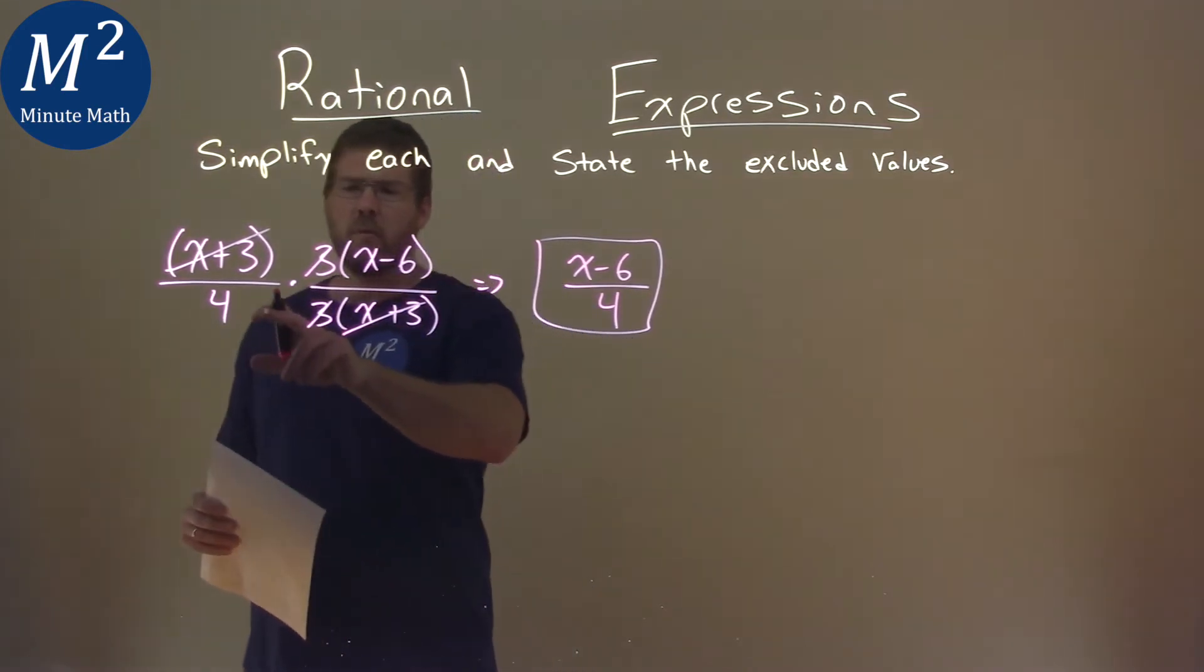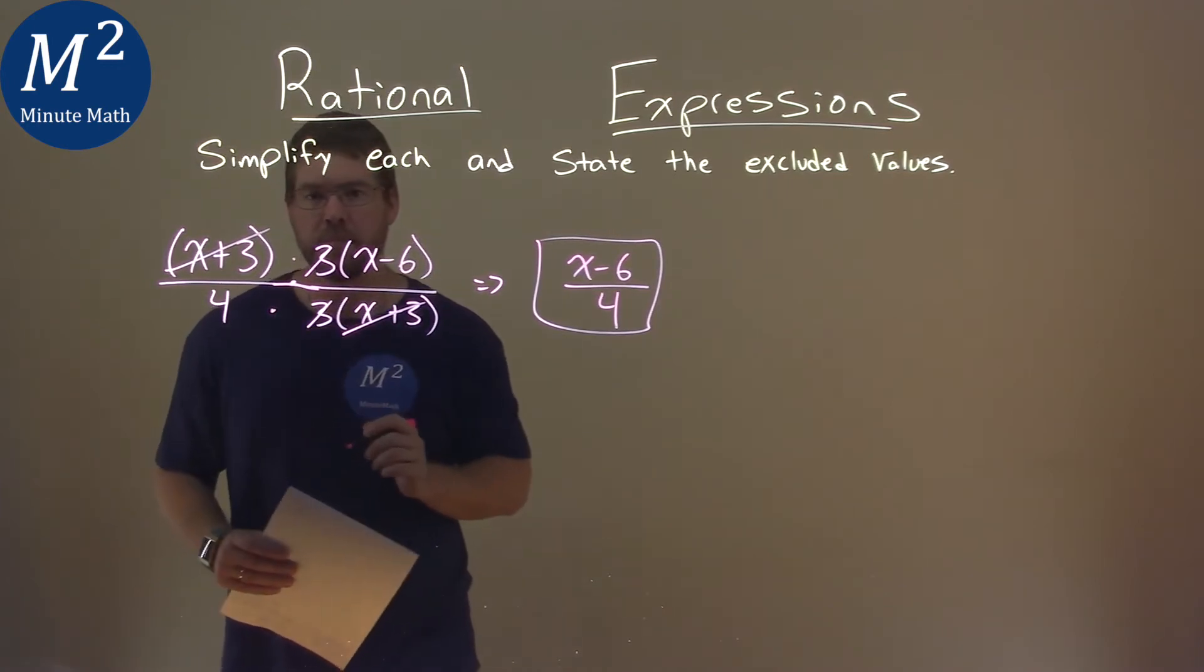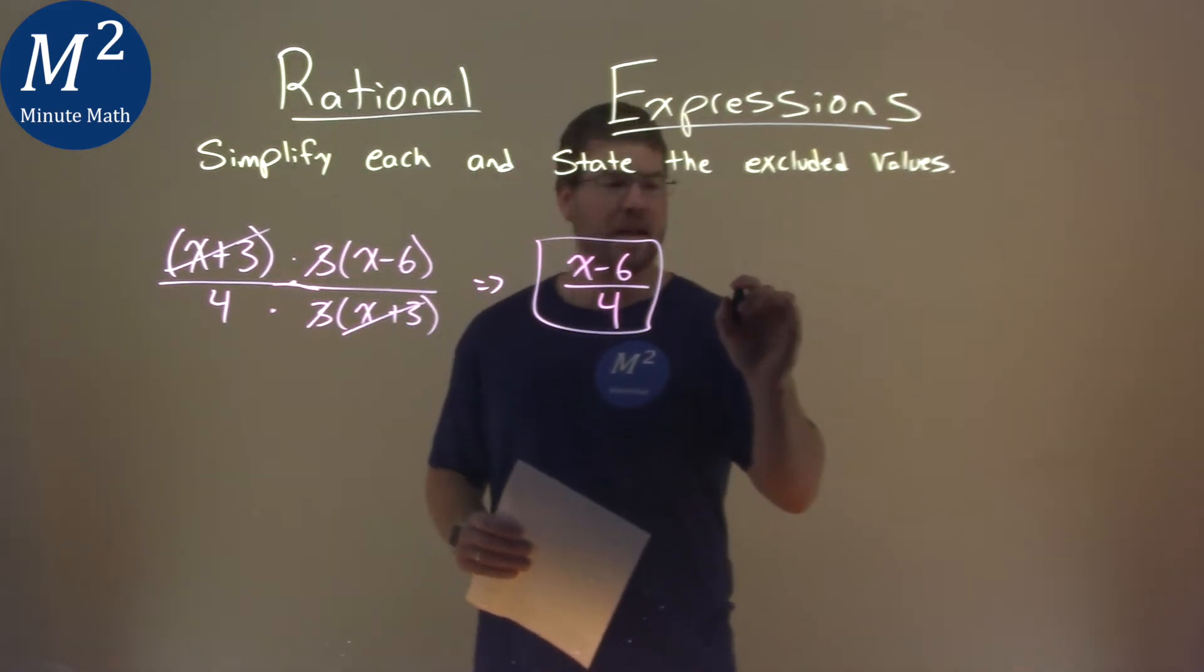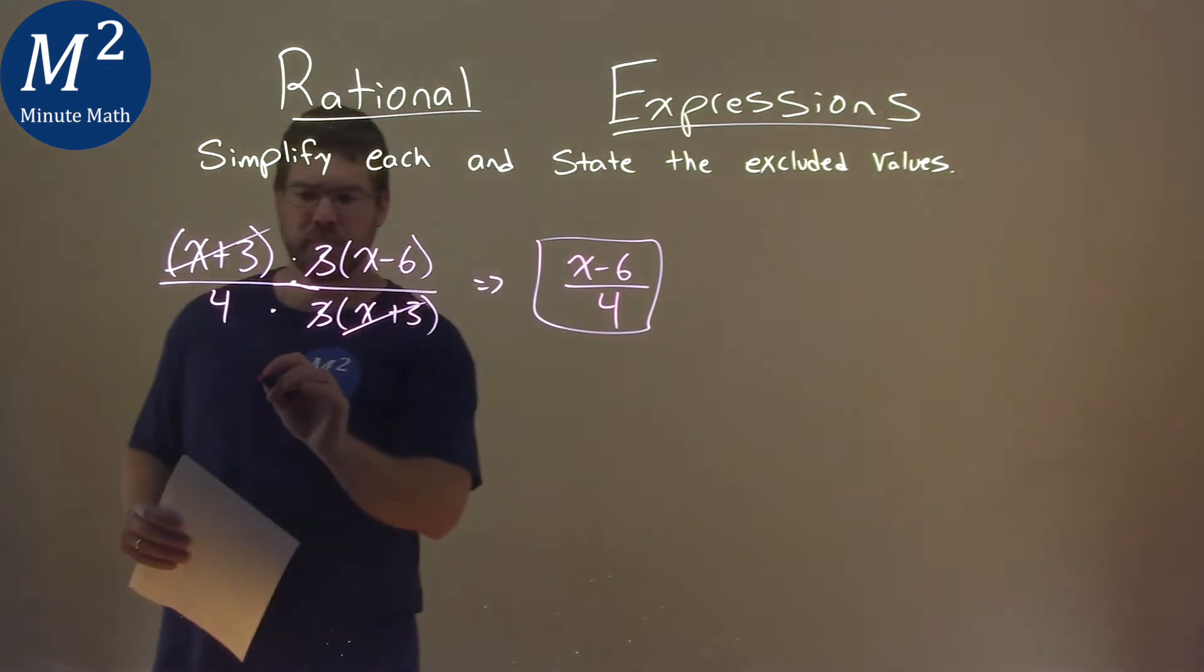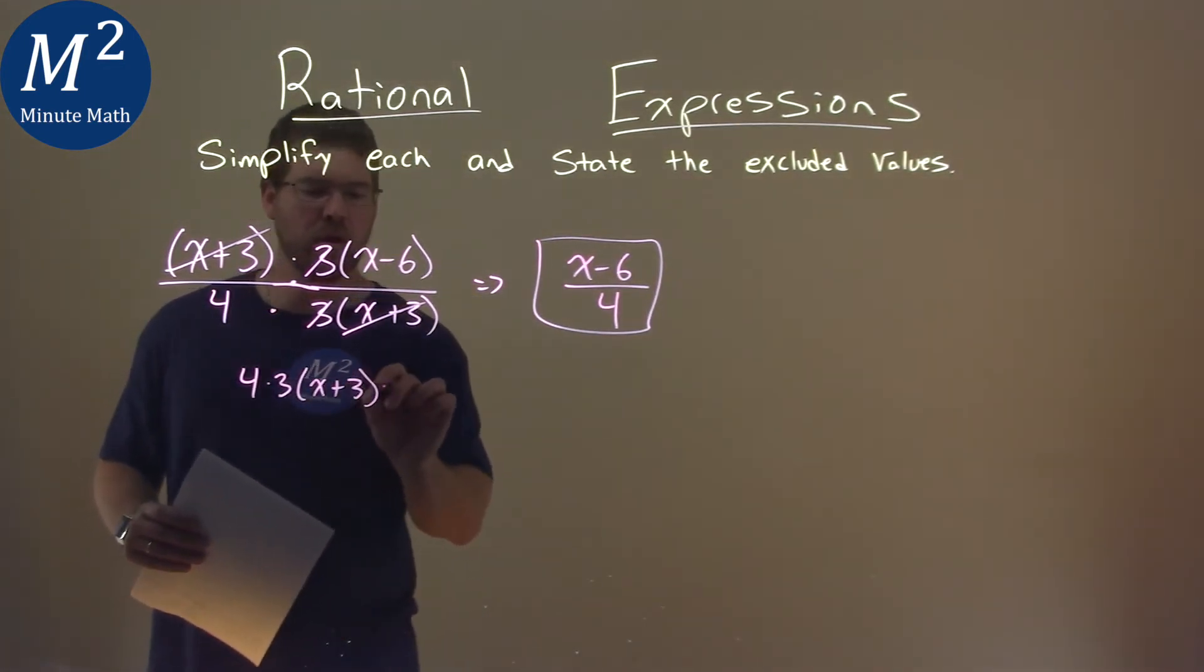We can see this as one big expression with multiplication here and another multiplication there. We're going to set our denominator equal to 0. I'll put it here: 4 times 3 times x plus 3, all equal to 0.